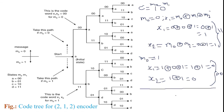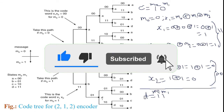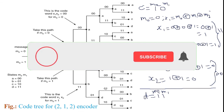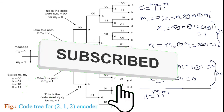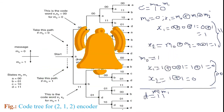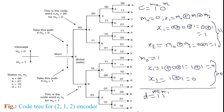Similarly, for the next state D = 11 (M2 = 1, M1 = 1): with M0 = 0, the code tree goes upward and the output is 01; with M0 = 1, the code tree goes downward and the output is 10. This is the concept of the code tree for the 2,1,2 convolutional encoder.